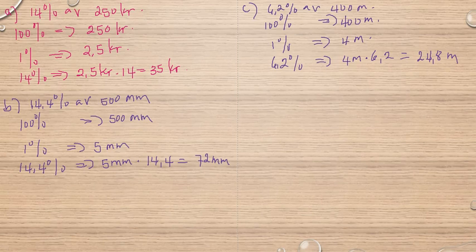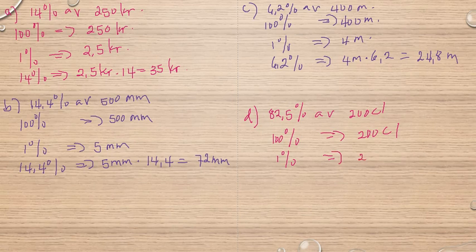Let's look at D. 82.5% of 200 centiliters. It's important with the unit, as I said. 100% is 200, which corresponds to 200 centiliters. 1% corresponds to 2 centiliters. So 82.5% corresponds to 2 centiliters multiplied by 82.5. And then we have 82.5 multiplied by 2, which is 165 centiliters.